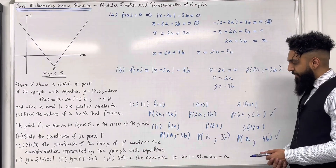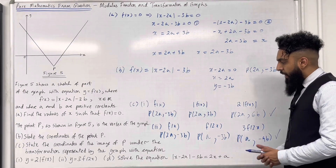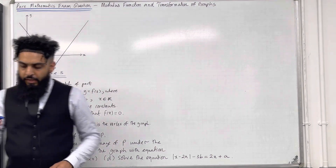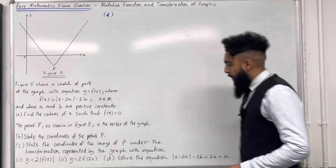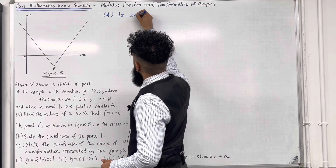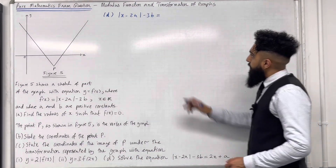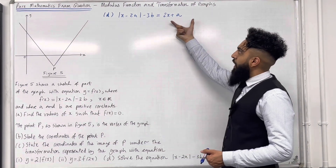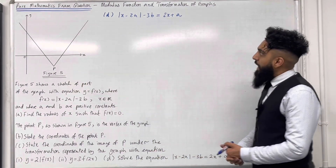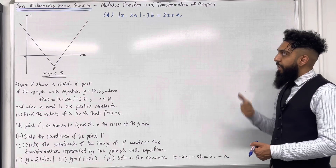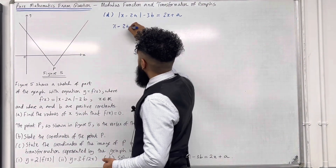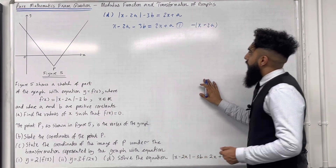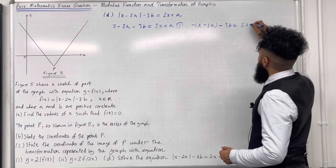Let's move on to part D: solve the equation |x − 2a| − 3b = 2x + a. Please pause the video and have a go; once you've got your complete solution, then play the video. In part D, we solve this modulus equation. The solution represents the intersection of the modulus graph with the line y = 2x + a. We generate two equations: equation 1 is x − 2a − 3b = 2x + a, and equation 2 is −(x − 2a) − 3b = 2x + a.